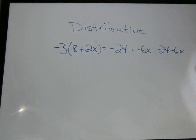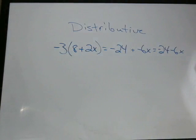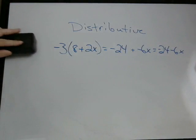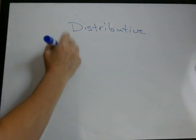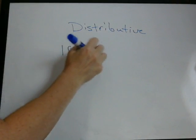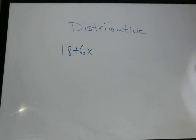Now you can also do this the opposite way, where you're given this answer and you're trying to get it into something with a parentheses. We start with 18 plus 6x. The way you're going to work backwards is you look at these two numbers and decide what's the largest number that will divide into each of those evenly.